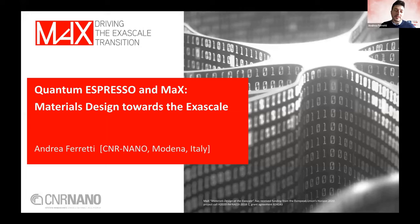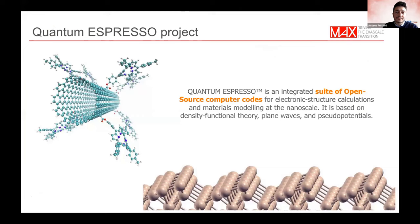Now going back to the deepest building block in the chain of hierarchies we've just heard about. One of these is Quantum Espresso, which is the quantum engine we are going to use throughout this workshop. Quantum Espresso is an integrated suite of open source computer codes for electronic structure aimed at materials modeling at the nanoscale, and it is mostly based on density functional theory, plane waves, and pseudopotentials.